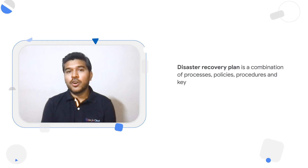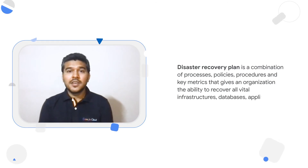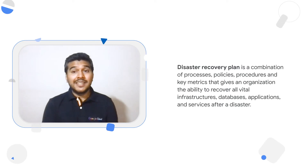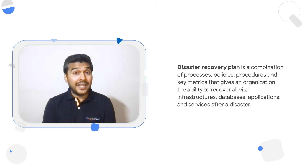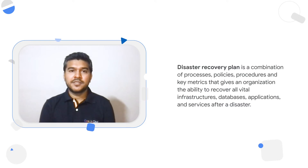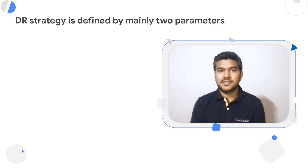So how can we proactively prepare from these? We plan for a disaster through a disaster recovery plan. A disaster recovery plan is a combination of processes, policies, procedures, and key metrics that gives an organization the ability to recover all vital infrastructures, databases, applications, and services after a disaster — but in minimal time with minimal impact. How do we quantify the minimal time and minimal impact, as it can vary from one use case to another? Primarily, a DR strategy is defined using two key metrics: RPO and RTO.